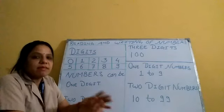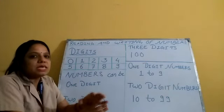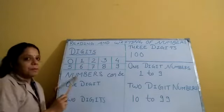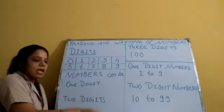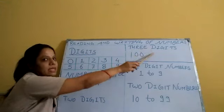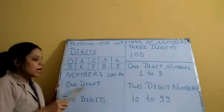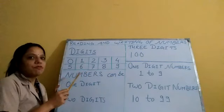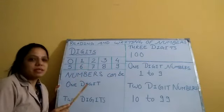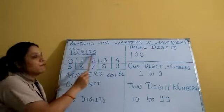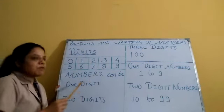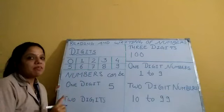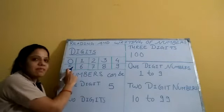Now the word is numbers — N-U-M-B-E-R-S. What is the meaning of numbers? Numbers can be 1-digit, 2-digit, 3-digit, or more. It means numbers are formed with the help of digits. For example, the number 5 is a 1-digit number — it is formed from the digit 5.